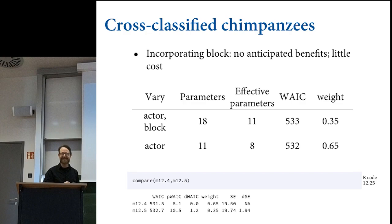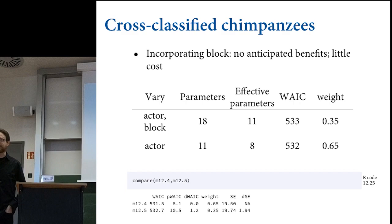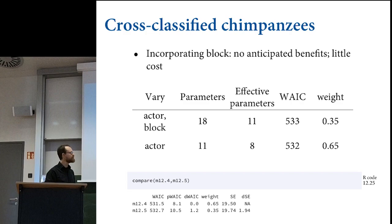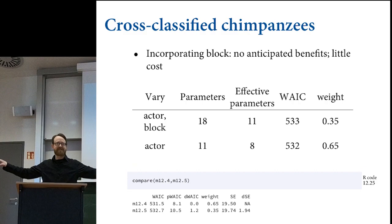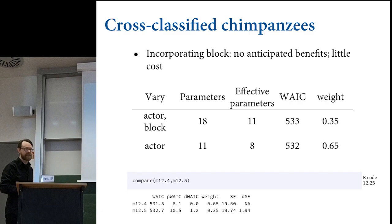The model with both effects gives you an estimate of the block effect, which you might want to report. When WAIC varies by one point, you should never get excited. The difference in WAIC between the two models is 1.2, and the standard error of that difference is two. The error estimate in that difference swamps the actual difference. That's the nice thing about WAIC compared to AIC: you get a standard error estimate to moderate your enthusiasm.